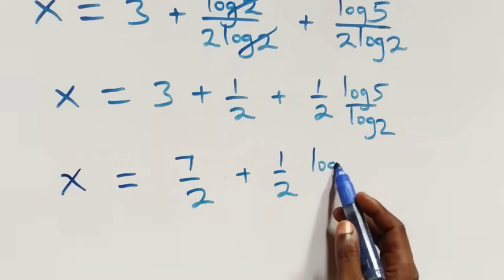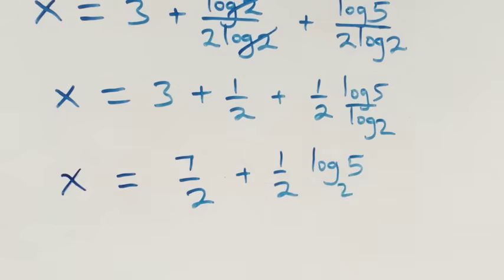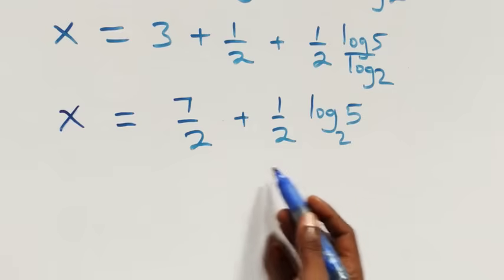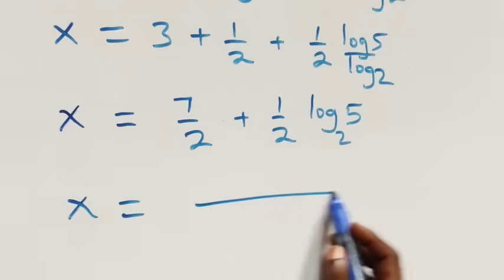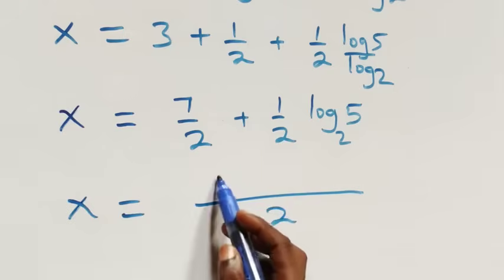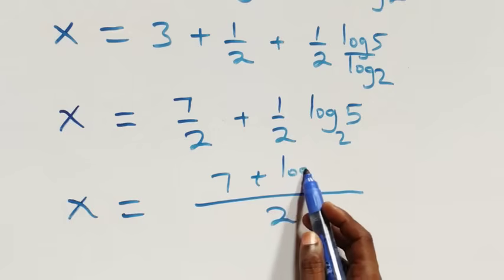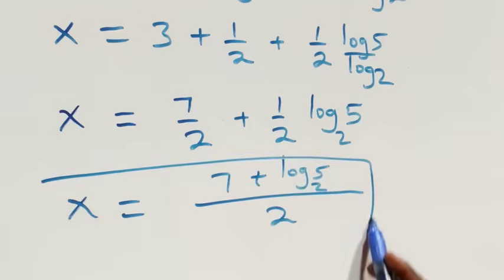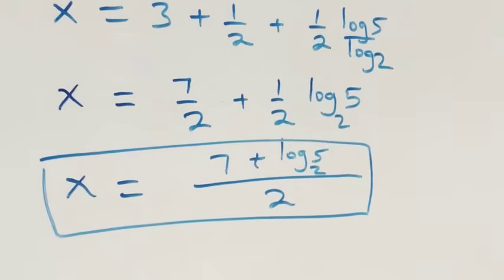Applying change of base, log 5 over log 4 becomes log 5 to base 2 divided by 2. Bringing the fraction together, we have x equals 7 over 2 plus log 5 to base 2 over 2. So the value of x is equal to 7 plus log 5 to base 2, all over 2.